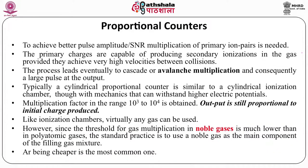After the ion chamber region, there is a proportional region where the pulse height or charge collected is proportional to the initial ionization produced. This is achieved by increasing the voltage applied across the gas detector to improve the signal-to-noise ratio. The primary ions produced by ionizing radiation start producing secondary ionization, leading eventually to cascade or avalanche multiplication and consequently a large current or charge pulse at the output. The signal amplification in a proportional counter is 10³ to 10⁴ compared to an ion chamber.